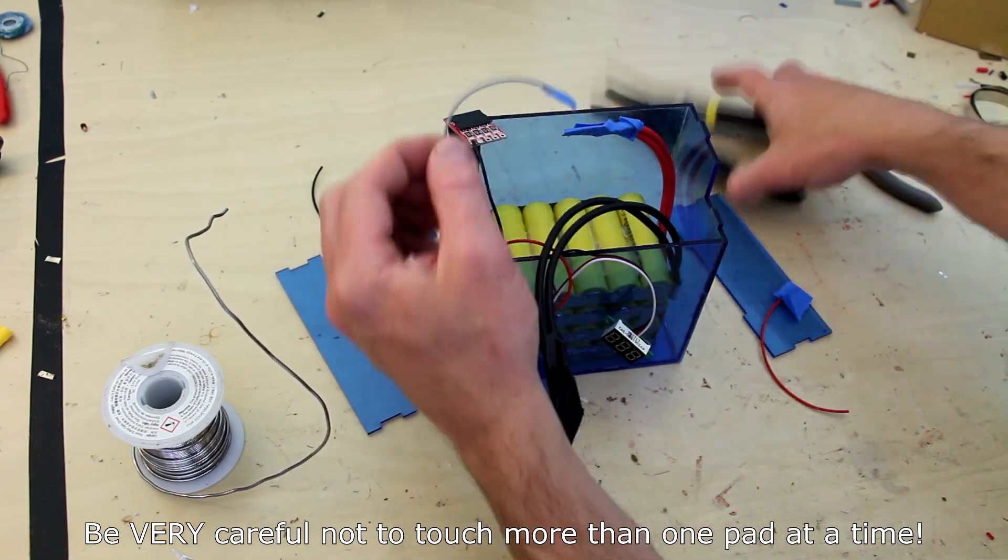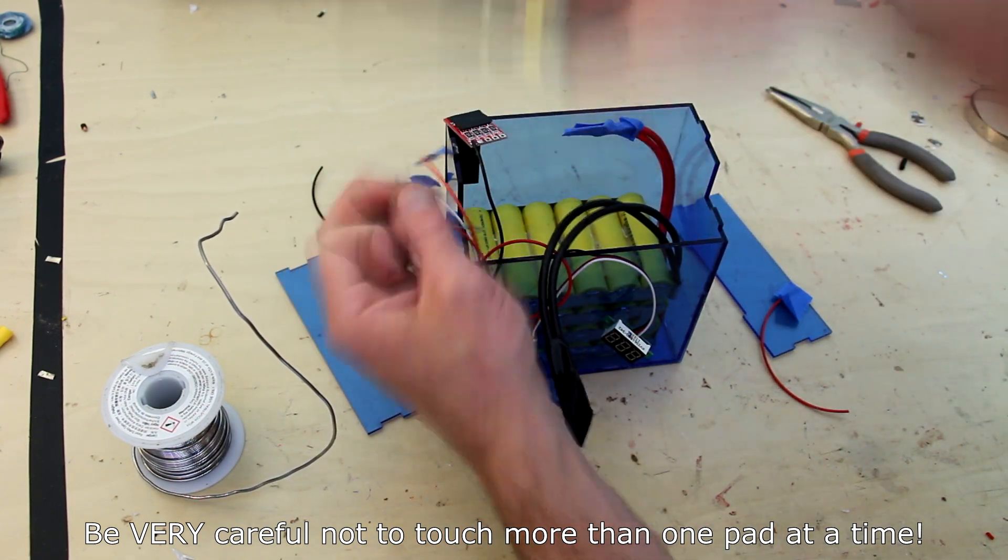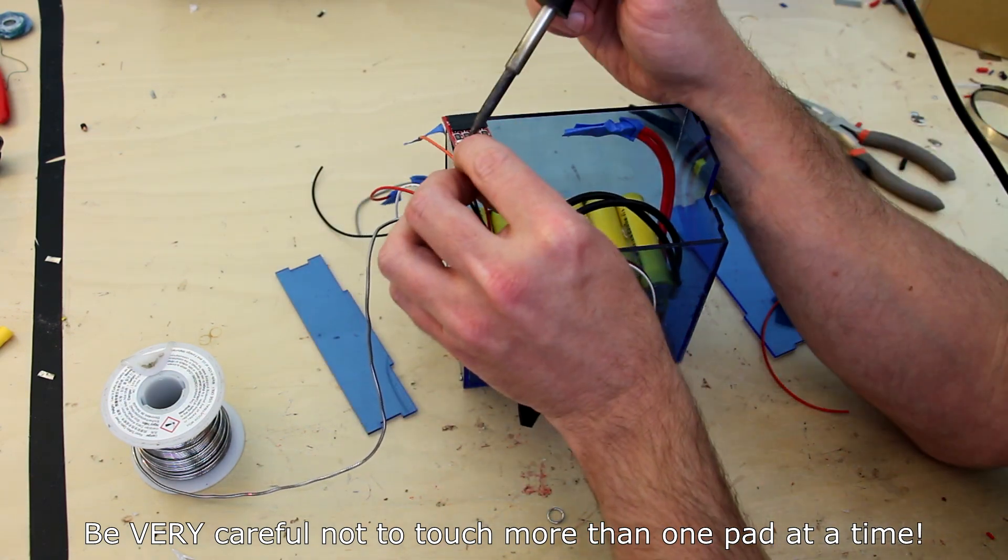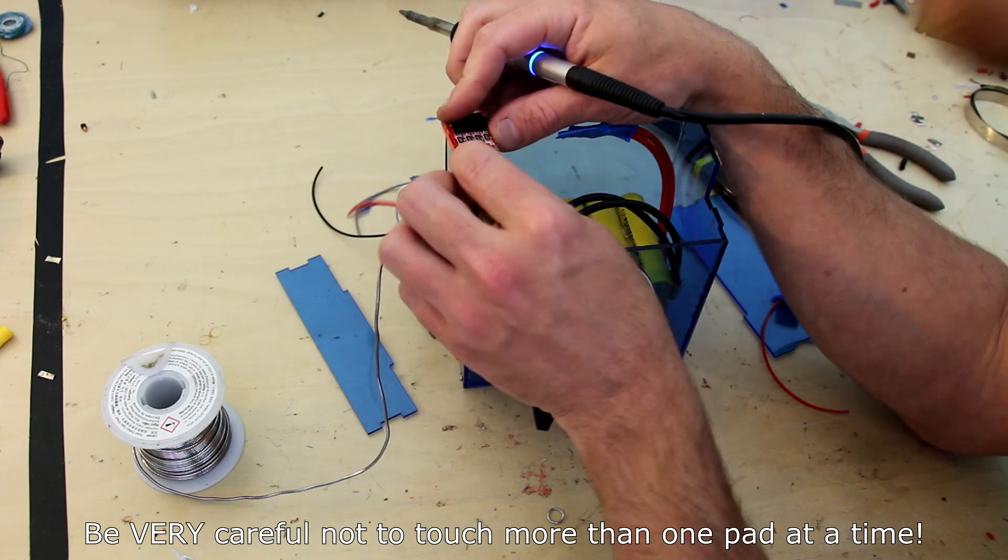Remember that each of these leads is hot, and if you short out a lead, thus touch two pads together, you're going to create a short which can damage your soldering iron, the BMS, or the wires.